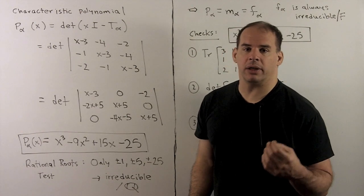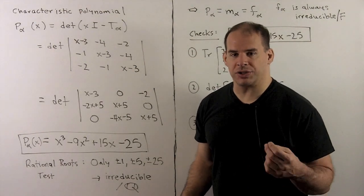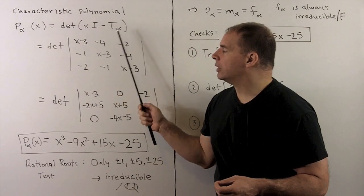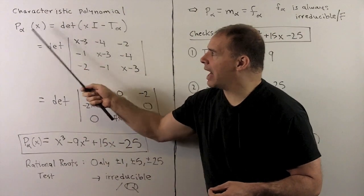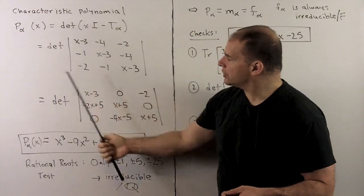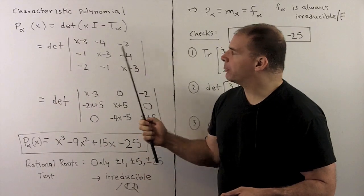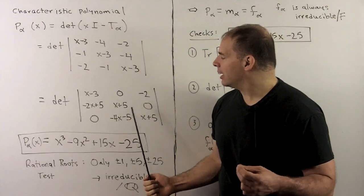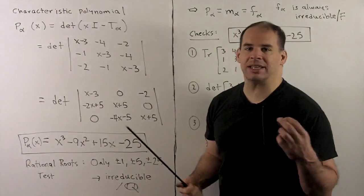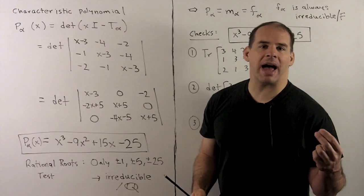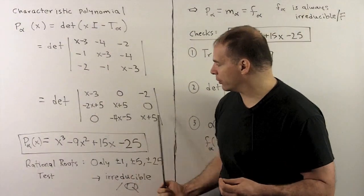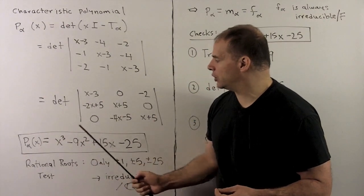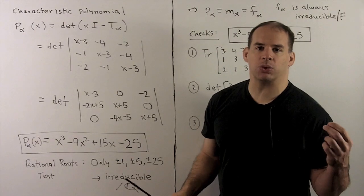To compute the minimal polynomial of T sub alpha, we first compute the characteristic polynomial: the determinant of x times I minus T sub alpha, denoted p sub alpha of x. Before computing, we apply some row and column operations to put zeros in the matrix, then do row or column expansions to get the determinant. Alternatively, we can apply the six diagonals trick since we're 3 by 3. Either way, we get the characteristic polynomial equal to x cubed minus 9x squared plus 15x minus 25.